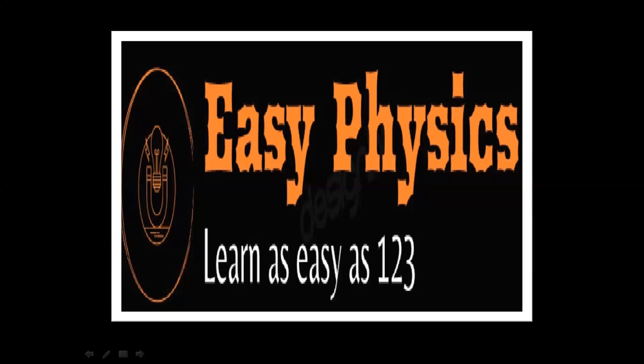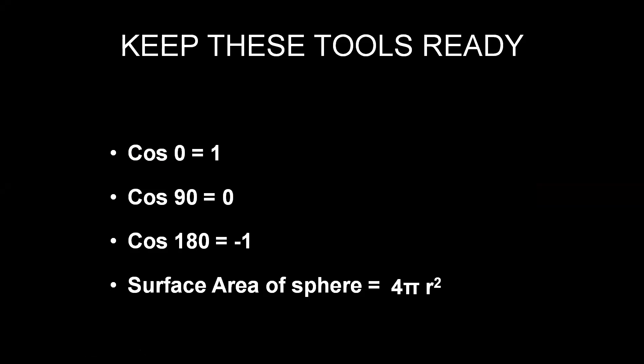Before we start studying what is electric flux and Gauss's theorem, we need to memorize some mathematical tools which we have already studied. Let us refresh our mind: cos 0 is 1, cos 90 value is 0, cos 180 is minus 1. Surface area of spherical objects is 4πr². We have also studied about the scalar product of two vectors — vector A dot vector B equals AB cos θ, where θ is the angle between A and B.